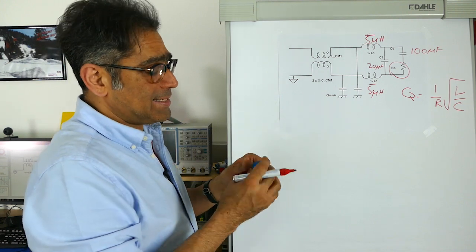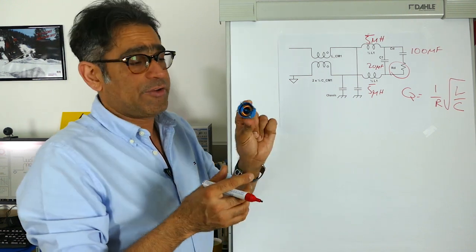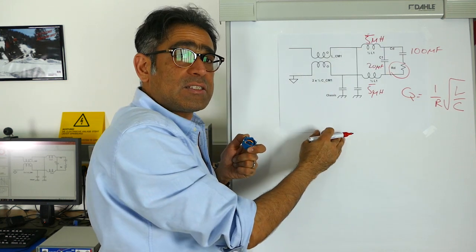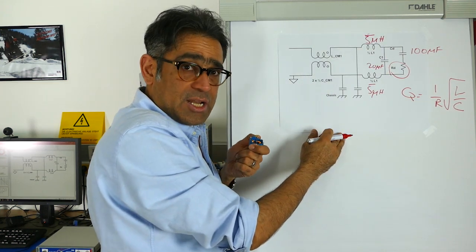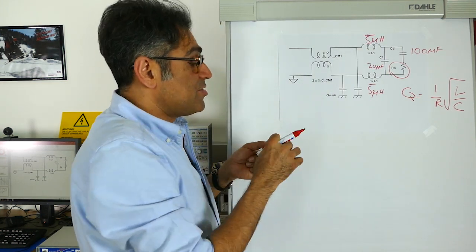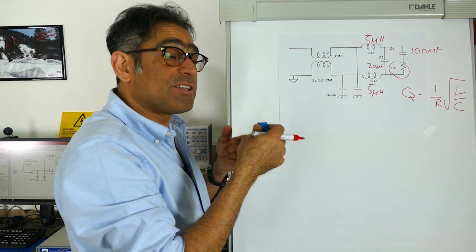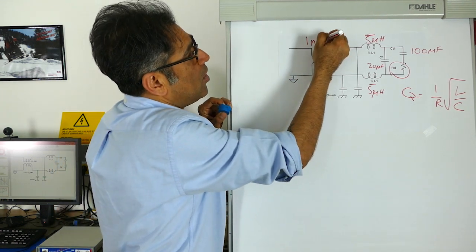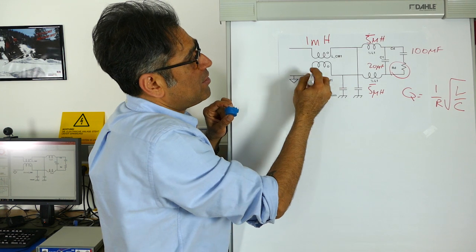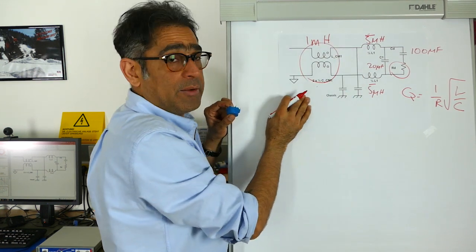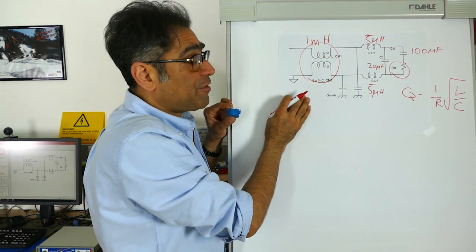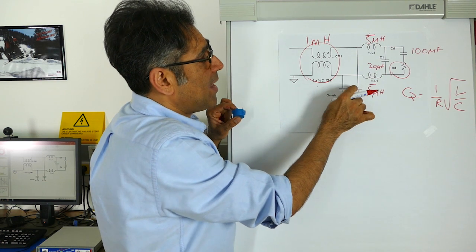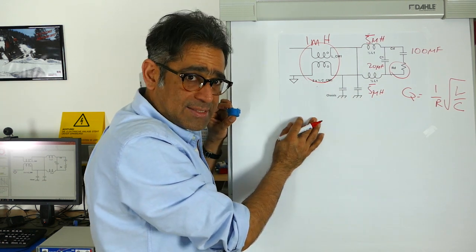For simplicity, let's say I find a common mode choke that has 10 microhenries of leakage inductance. The choke that has that much leakage inductance turns out to be 1 millihenry, so I end up with 1 millihenry worth of common mode inductance. Then the final thing I have to do is calculate the values of the common mode capacitors.